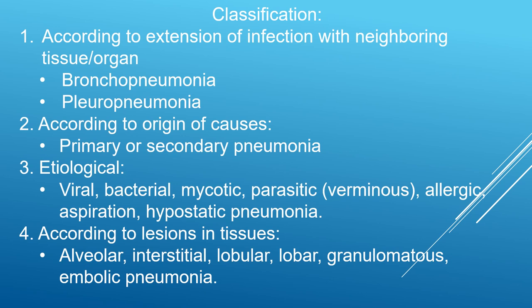The first classification is according to the extension of infection to neighboring tissues or organs. When the infection spreads to the bronchi, it is called bronchopneumonia — involving the bronchi, bronchioles, alveoli, and lung parenchyma. When infection spreads to the pleura causing pleuritis and involving the alveoli and lung parenchyma, it is called pleuropneumonia.